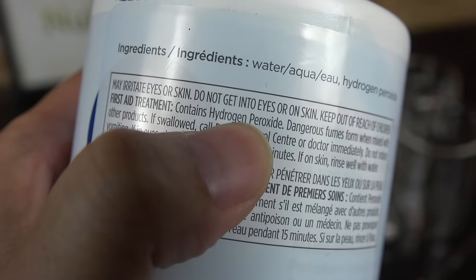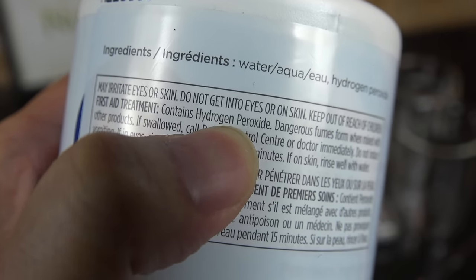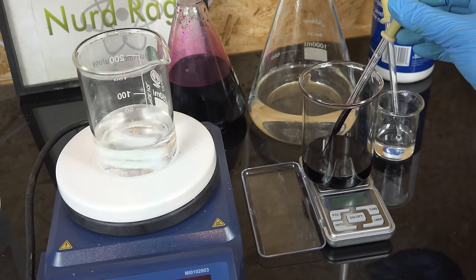Unfortunately this bottle doesn't list its concentration anywhere and without that its usefulness is considerably diminished. Even worse, this bottle is a bit old so it probably decayed in storage. Even if it listed the manufactured concentration, we don't know what it is after the decay. So we need a way to determine the current concentration.